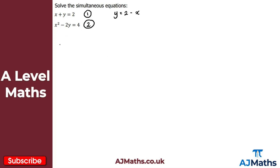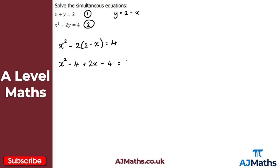Now I substitute this rearranged form of equation one into equation two. We get x squared minus two lots of (two minus x) equals four. Simplifying the left-hand side: x squared minus four plus two x equals four. Remember, when solving quadratics we want to make it equal to zero, so subtract four from both sides, giving x squared plus two x minus eight equals zero.